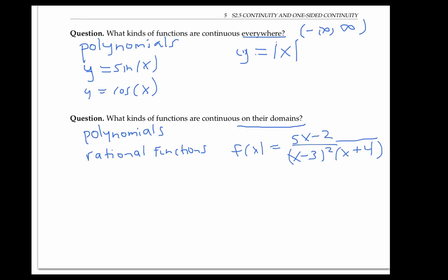Even though it's not continuous everywhere, because it's not continuous when x equals 3 or negative 4, it is continuous on its whole domain, because 3 and negative 4 are not in the domain of this rational function.